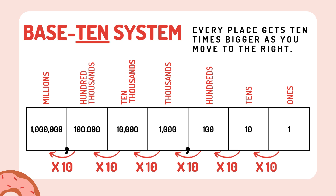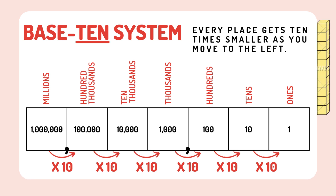Base 10 system: every place gets 10 times bigger as you move to the right. So this is ones, tens, hundreds, thousands, 10,000, 100,000, and millions. Every place gets 10 times smaller as you move to the left.